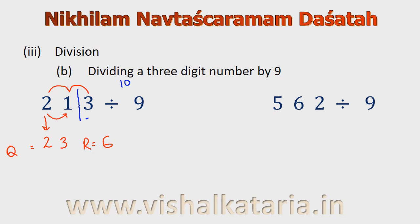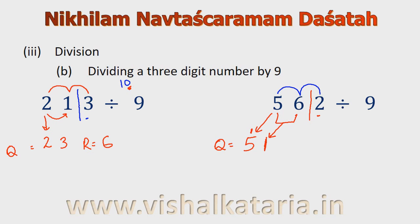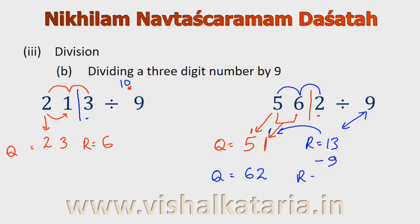The next example is 562 divided by 9. Again I will put a bar after the units place since 10 has only one zero. The quotient will begin with 5. The next cumulative sum is 5 plus 6 which is 11, so I write 1 and carry 1. The remainder will be the cumulative sum, which is 13. Since 13 is greater than 9, I subtract 9 and give 1 carry. So the quotient is 62 and the remainder is 4.